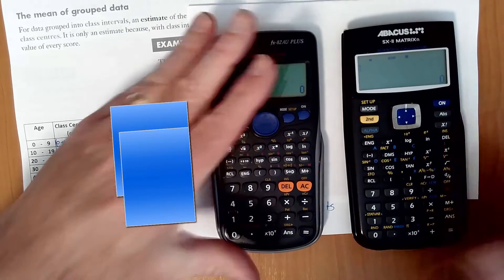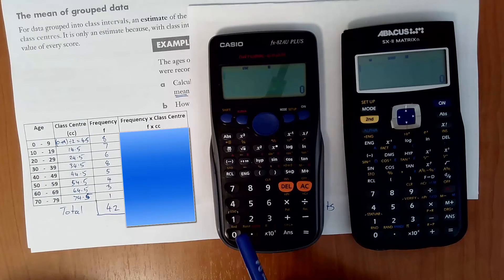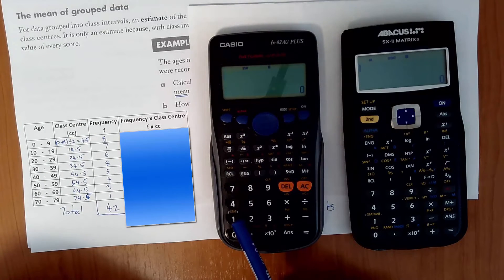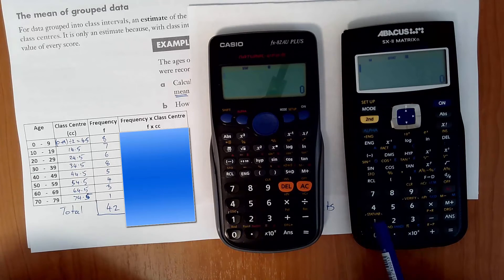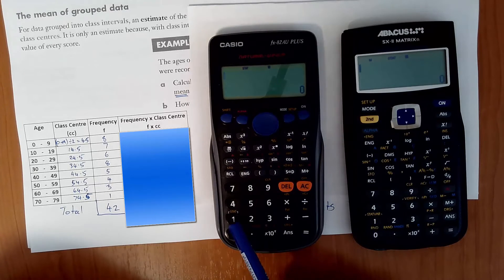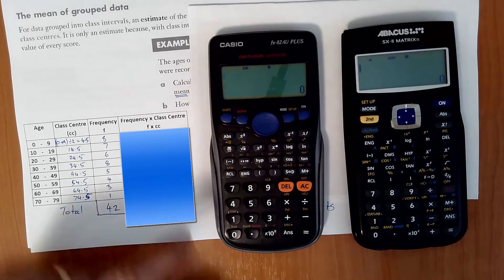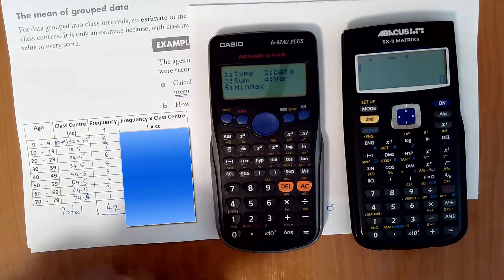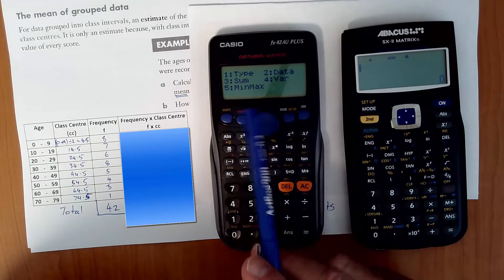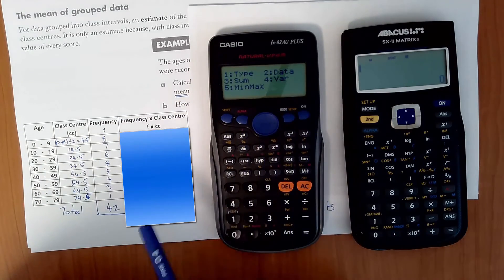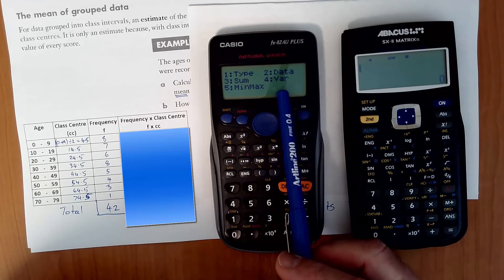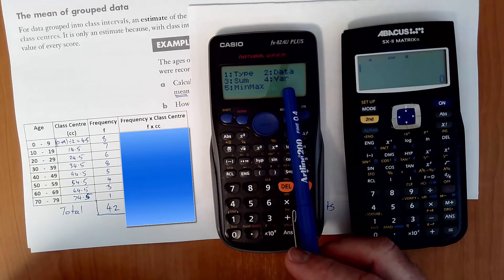Then, to get our estimation of the mean, we've got to go into the statistics functions. Which is on this calculator above the number 1 and on this calculator, again, above the number 1 where it says STAT VAR. This one just says STAT. So on this calculator, we go SHIFT, STAT. We get a menu that comes up. To work out the mean, we go into number 4, VAR for variances.